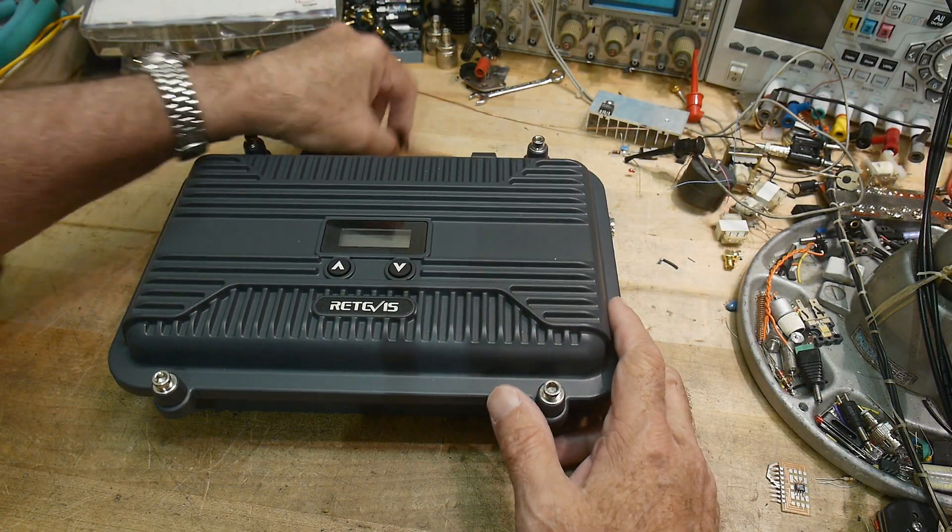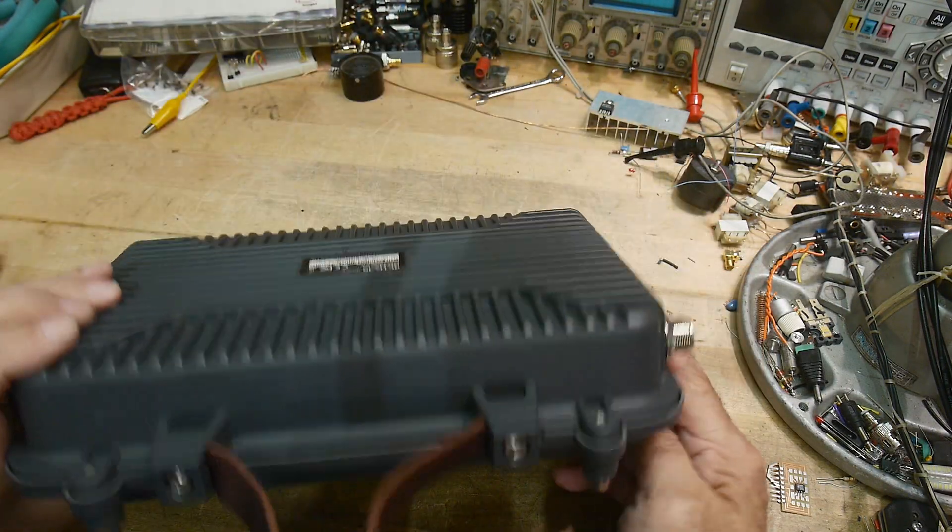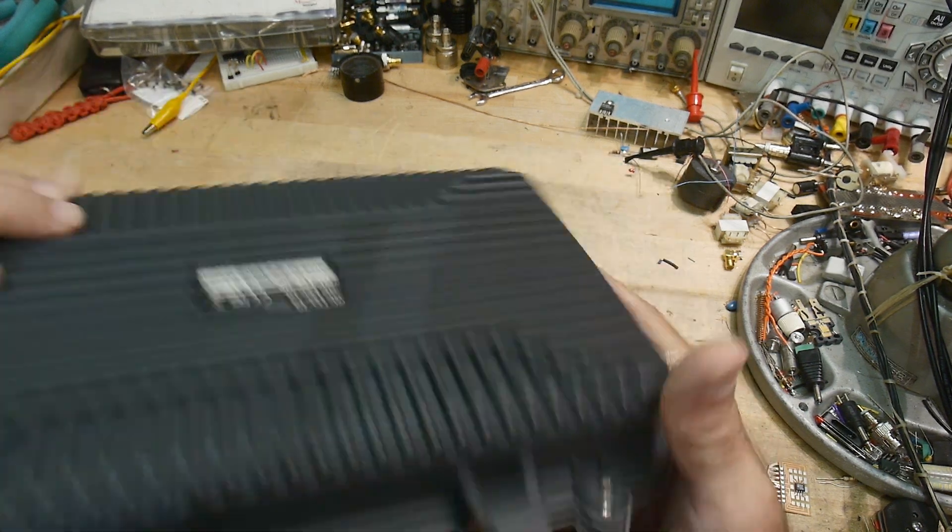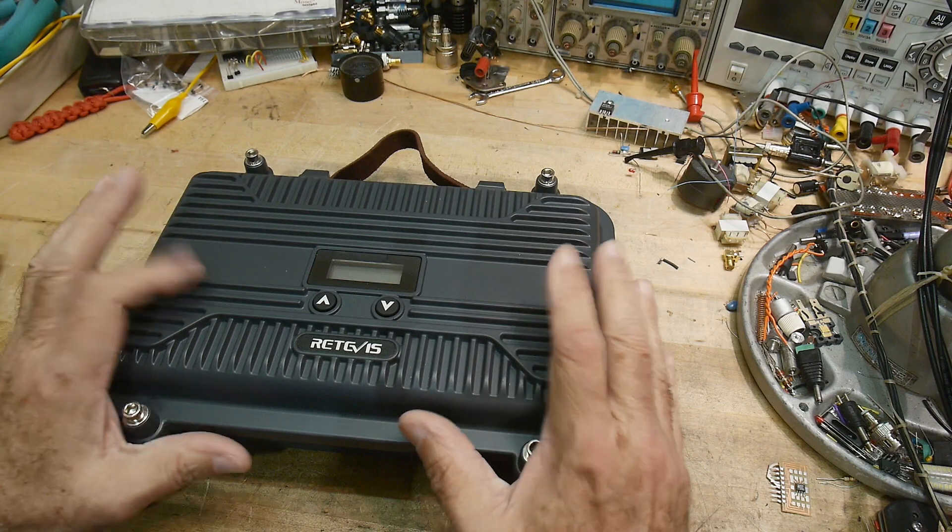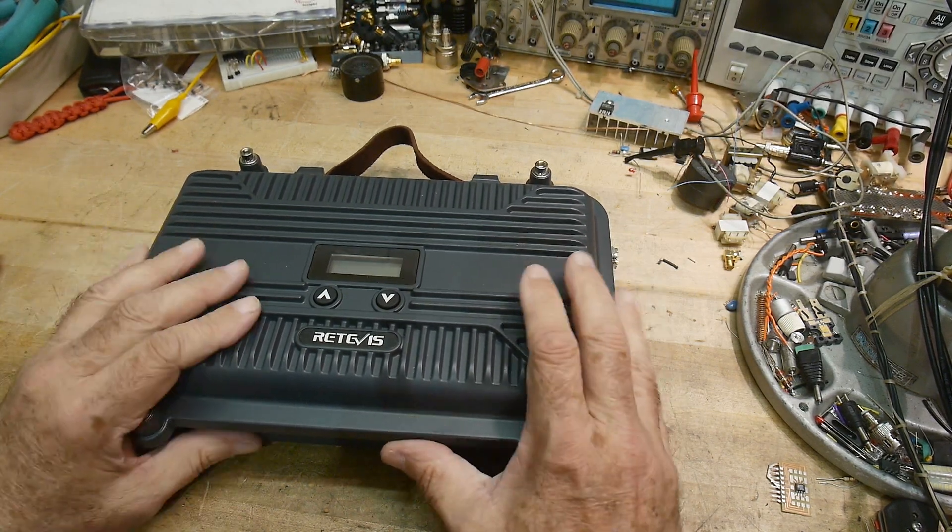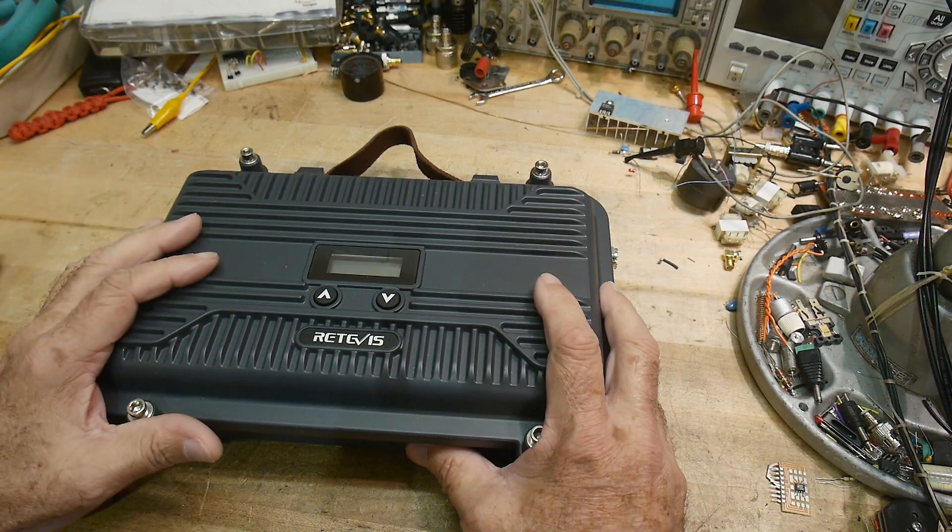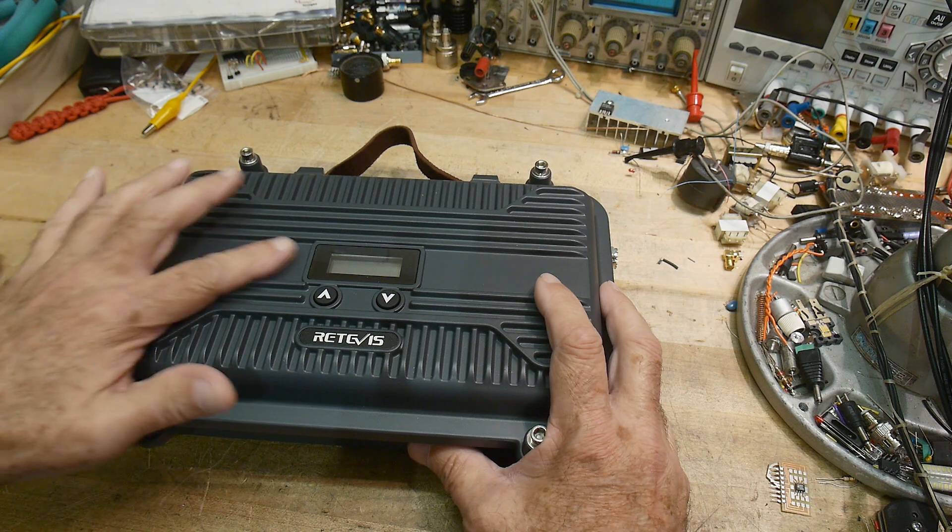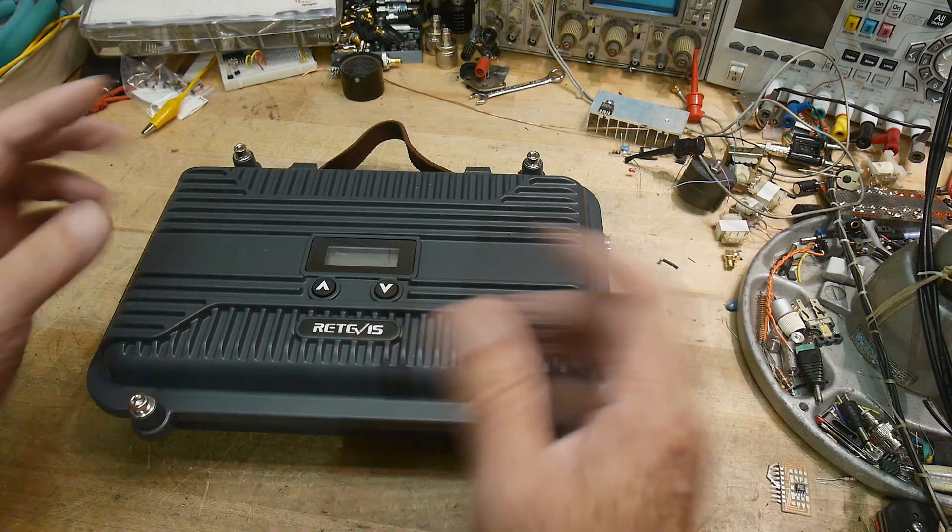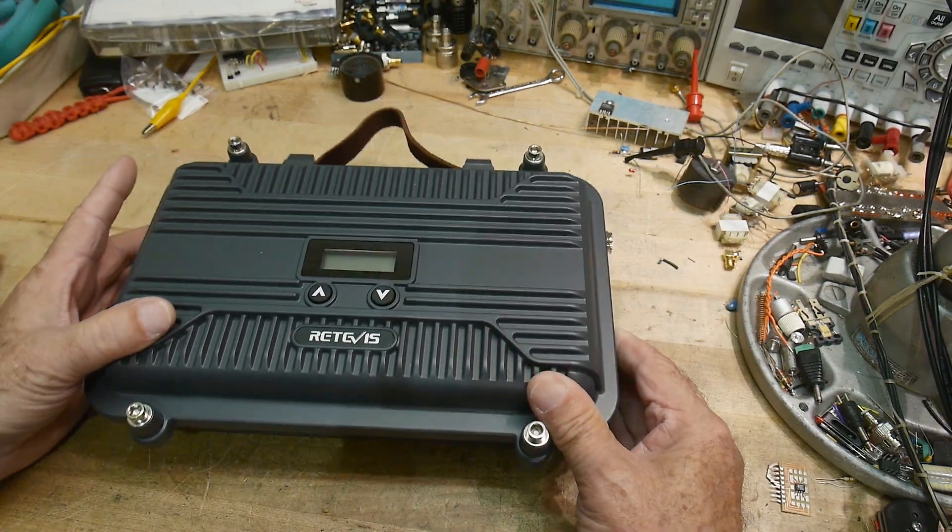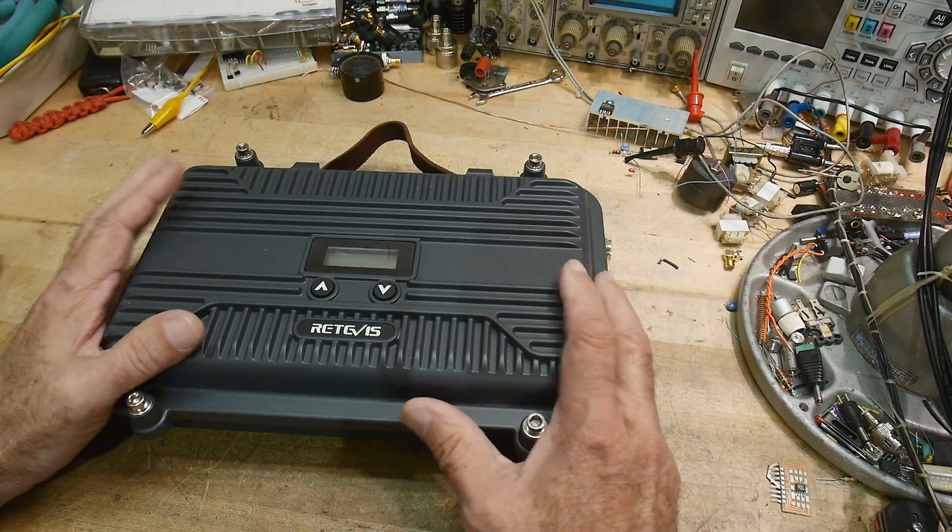So this came in the mail and it's a strange cast aluminum box that's pretty heavy and it's called a repeater. I know a lot of people on my channel are not ham radio enthusiasts or even radio enthusiasts at all. People come here for different reasons. I show all kinds of different electronics.